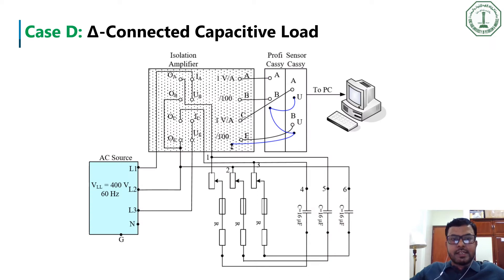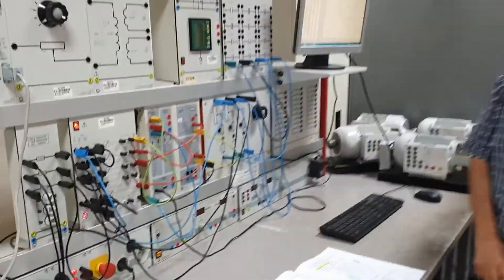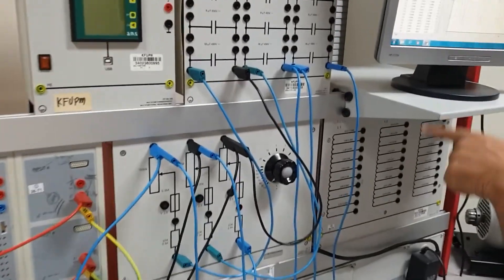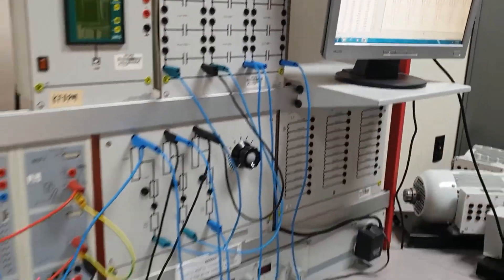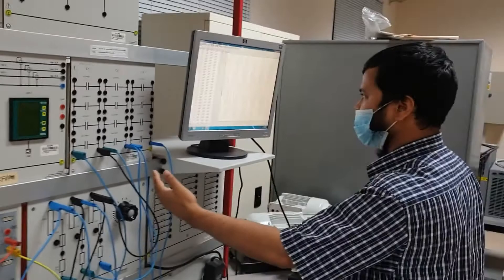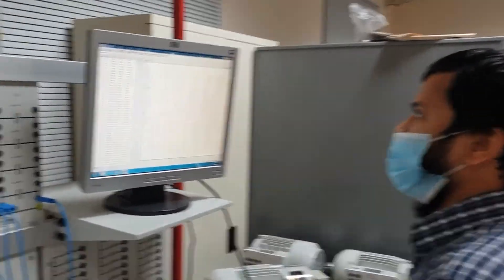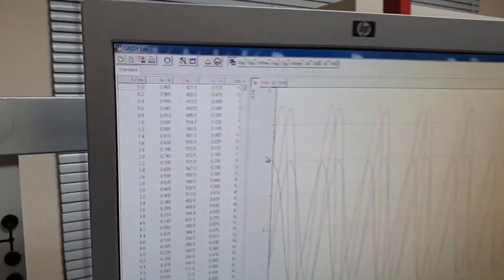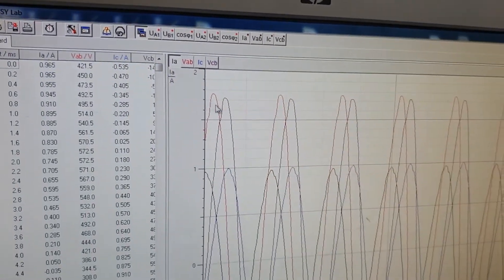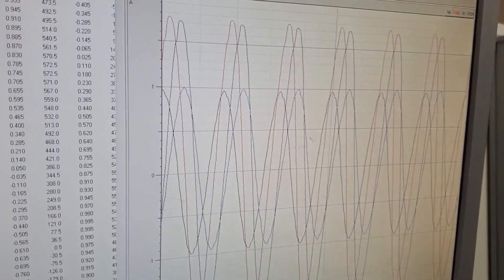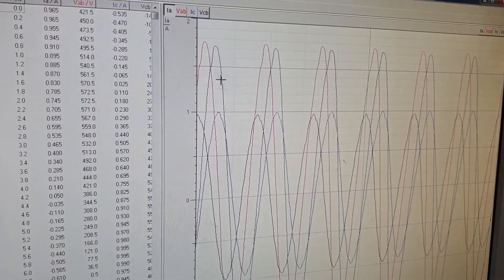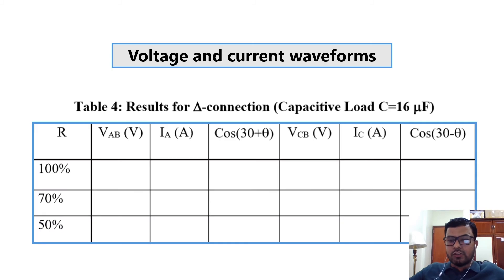Our final case D is the delta-connected capacitive load, where we changed the inductive load to a capacitive load following the manual to make a delta-connected capacitive load. Using automatic recording we capture waveforms for line voltage and line current. After clicking the clock icon we see the waveforms. Similar to previous cases, we recorded voltage and current waveforms and filled the table for case D.